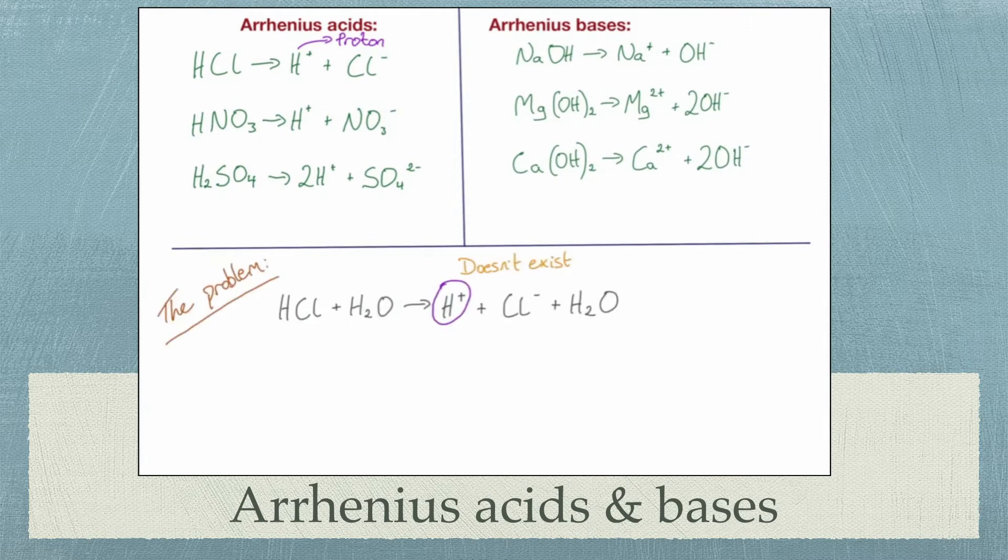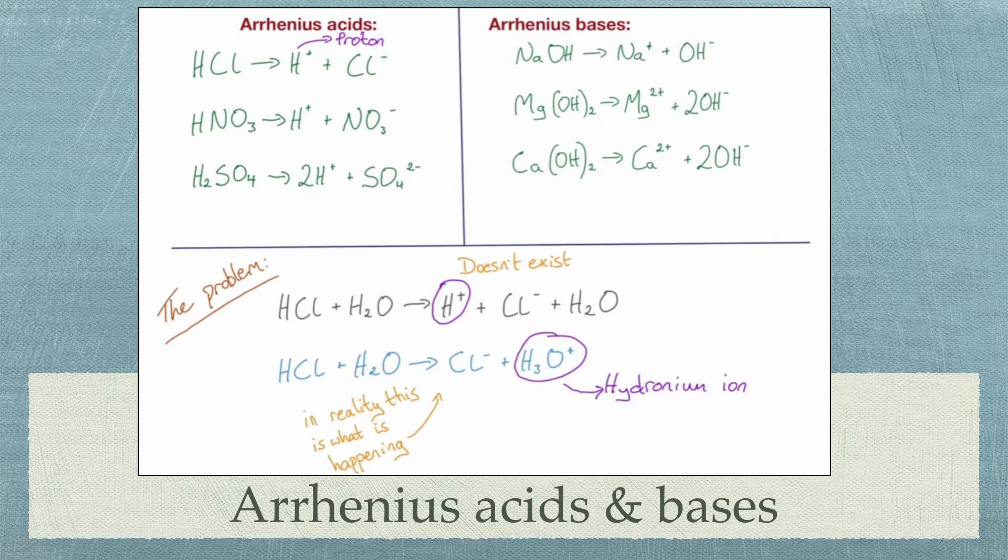Arrhenius' definitions were flawed, however. Arrhenius incorrectly assumed that H plus ions can exist independently in a solution. It was later discovered that the proton attacks the water molecule to form a H3O plus ion called a hydronium ion. The hydronium ion is very common for acids in an aqueous solution.